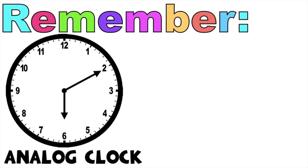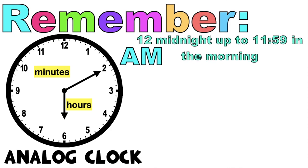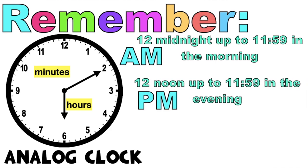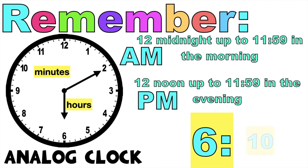Always remember, children: in an analog clock, the short hand tells the hours while the long hand tells the minutes. AM is used from 12 midnight up to 11:59 in the morning, while PM is used from 12 noon up to 11:59 in the evening. And lastly, when writing time using numerals, we write first the number of hours, followed by the colon, and then the number of minutes. So the time is 6:10.